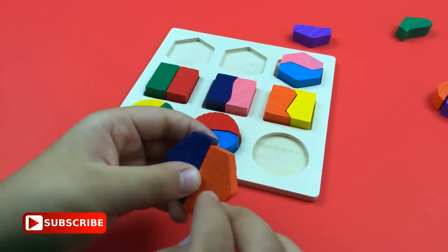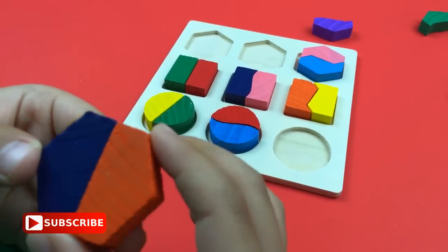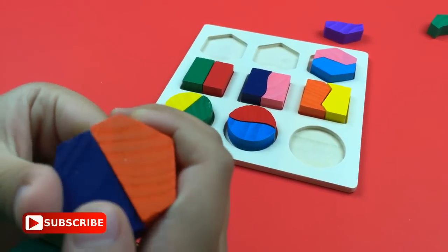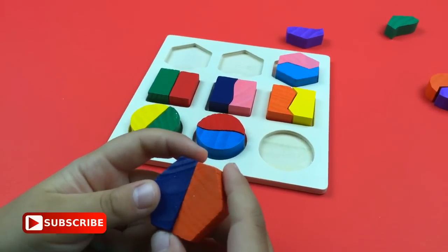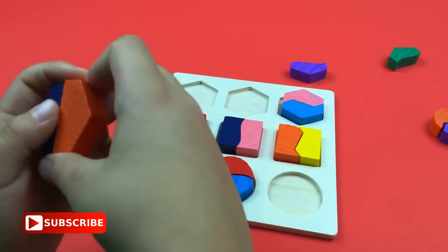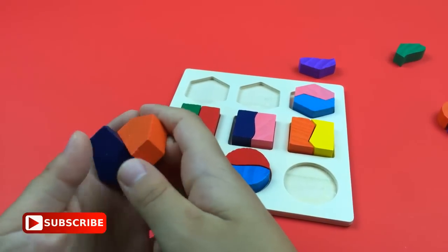You see this? One's orange, one's blue. It's a hexagon, but it's been cut with a straight line. That's what makes it a hexagon.